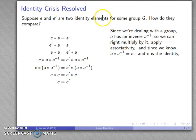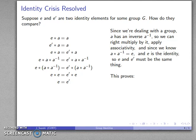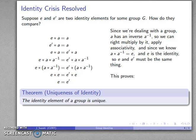And I found something out. If I have two identity elements, E and E prime, they actually have to be the same thing. And so this proves an important theorem, which is that the identity element of a group is unique.